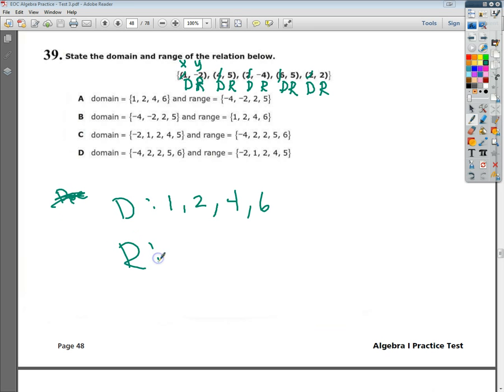On the other side, I have the range, and I want to do the same thing. Try to make it as close to numeric order as possible. So negative 4, negative 2, positive 2, and then I've got a couple fives, but I'm only going to show one.